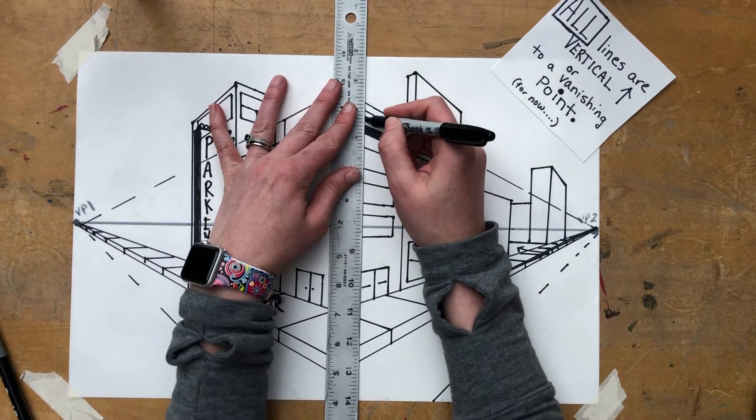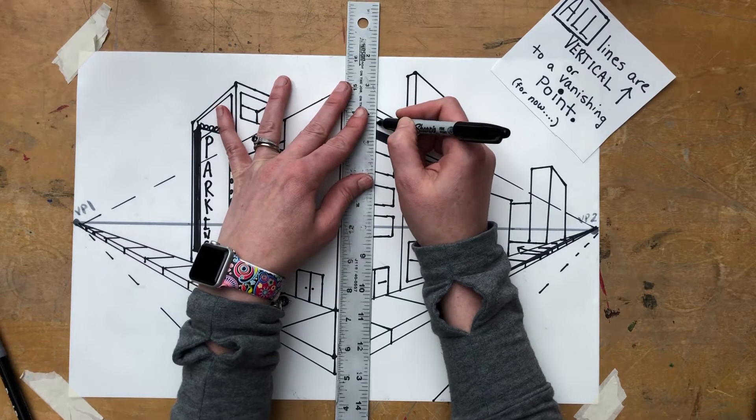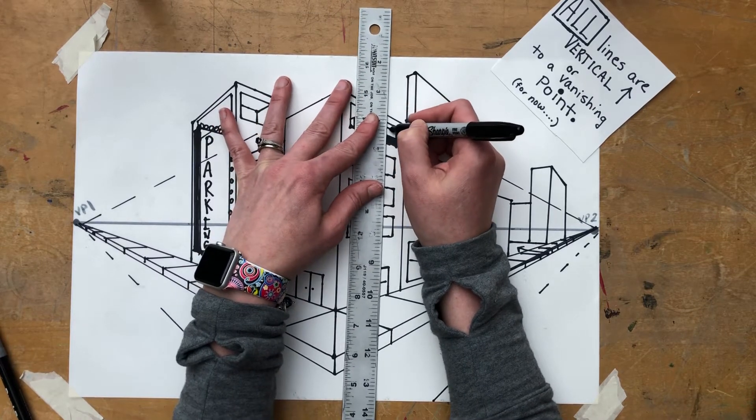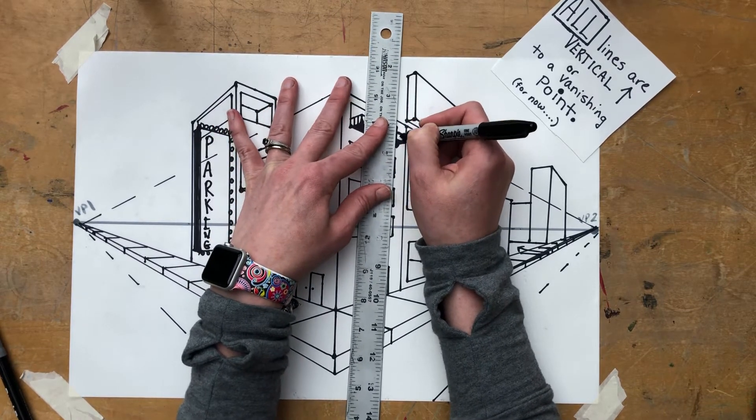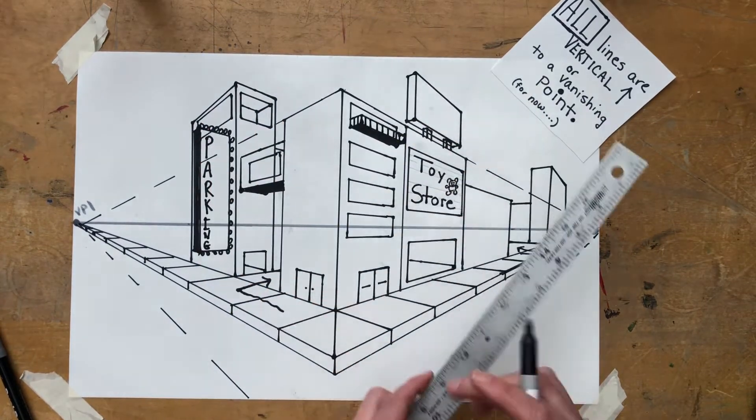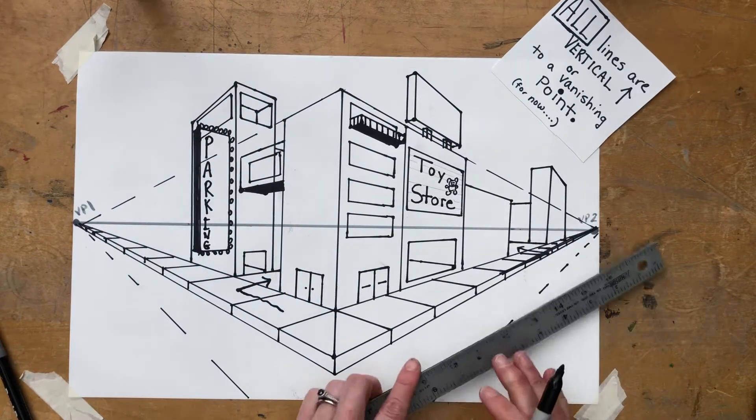Again, nothing I've done is not vertical or to a vanishing point. All these lines are vertical or to a vanishing point. I don't have a crooked ruler. I'm not making ramps or angle lines. This is all vertical or to a vanishing point.